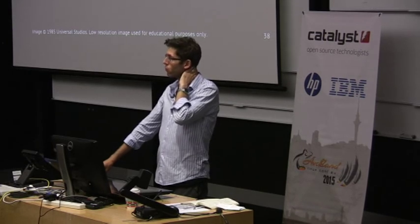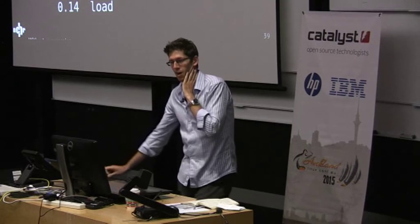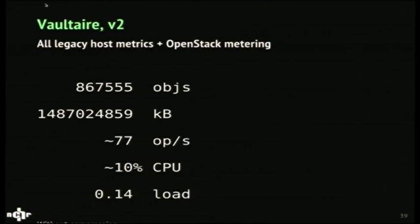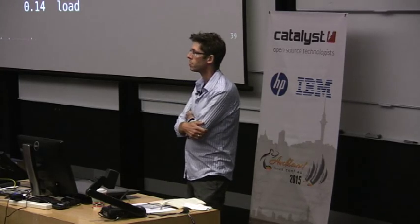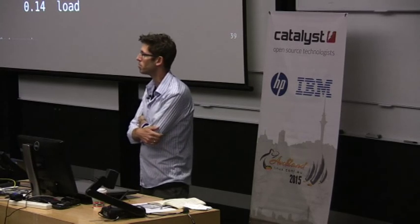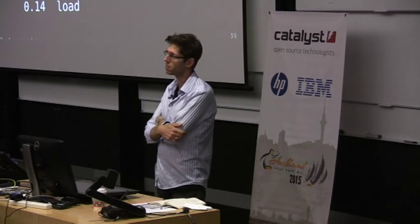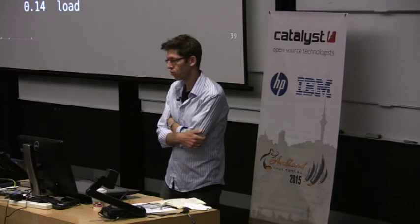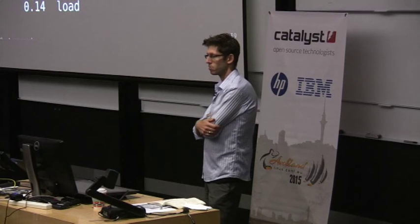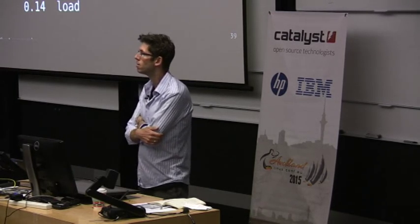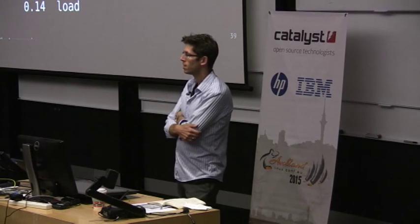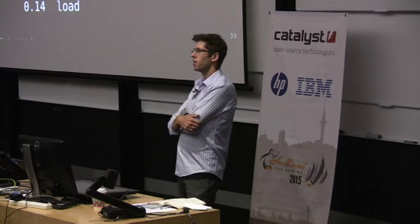I just pulled these numbers up an hour ago. This is the current size of our production vault: not even a million objects yet, and we're running about one and a half terabytes. This represents about 10 months of every data metric Anchor Systems has collected for system metrics, and it also now includes the last three months of all the data we've collected on metering OpenStack via Ceilometer. It's rolling at under 100 operations per second — about 77 operations a second — and the machines aren't twitching. That's a 15-minute load average on the writer. I'm pretty pleased about that. It means it's a viable system.